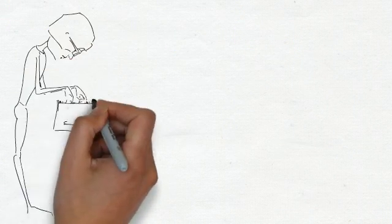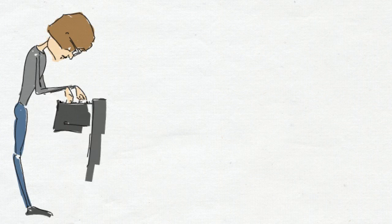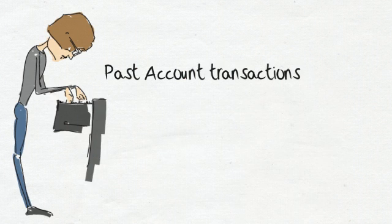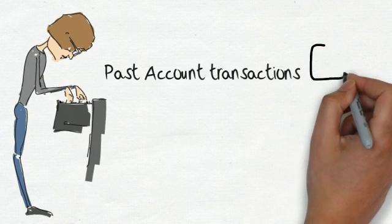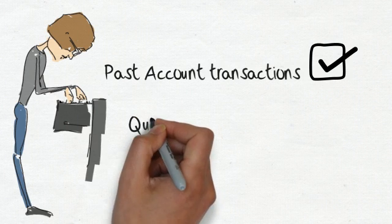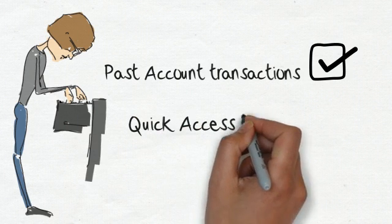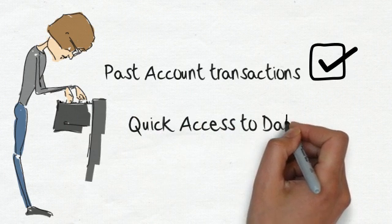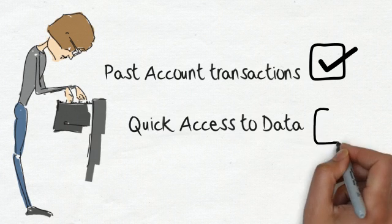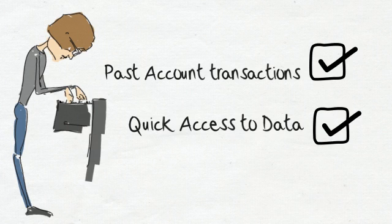Access to your data is important where banking is concerned. You could ask your bank for past account transactions and the bank has an obligation to provide it. Since banking is a frequent activity, performance is taken for granted. When at an ATM you expect your transaction to be completed quickly.